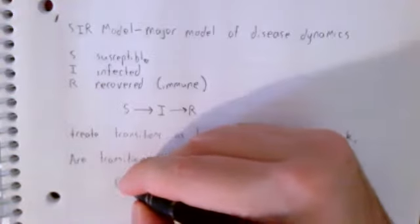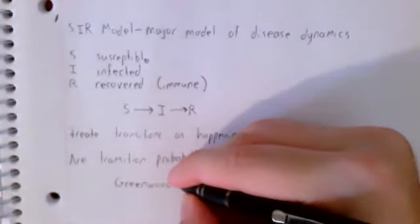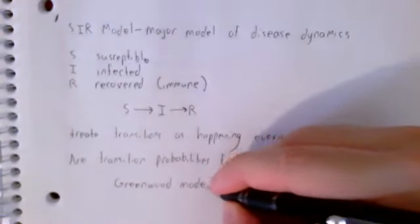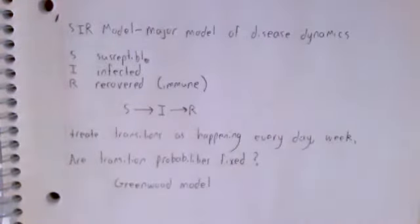Now a mathematician named Greenwood argued that there are still cases where using a Markov process is appropriate. So non-infectious diseases perhaps spread by a tainted water supply or something like that. And when the SIR model is studied as a Markov process, it's called the Greenwood model.